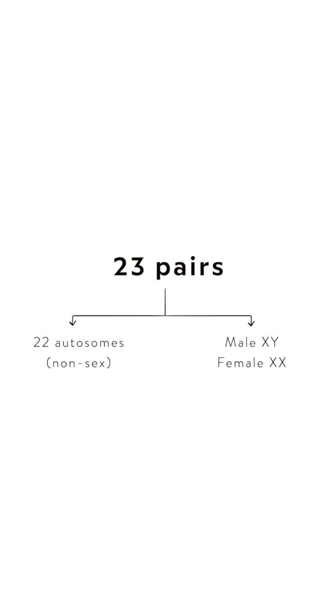These pairs are called homologous pairs, and one of each pair of chromosomes will come from mum, while the other will be inherited from your dad.